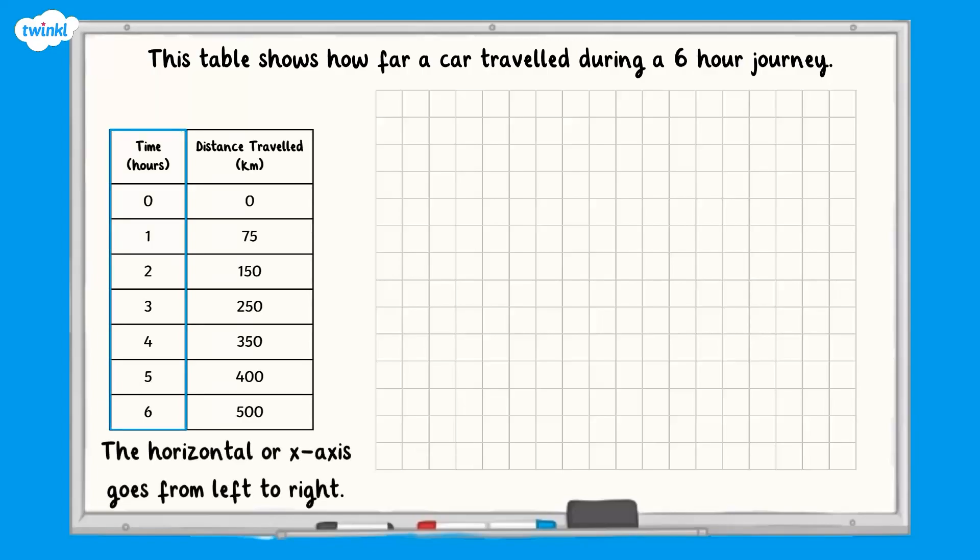Remember, this is the line that goes from left to right at the bottom of the graph. Our line will start at 0 and end at 6, so we need to decide how long it should be.